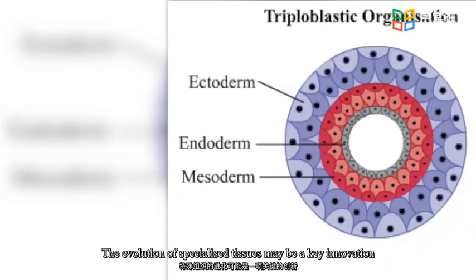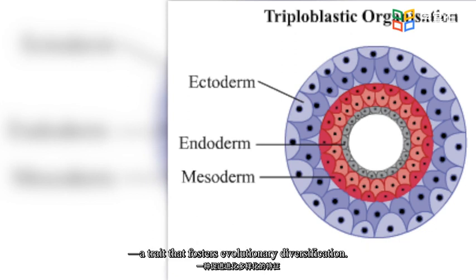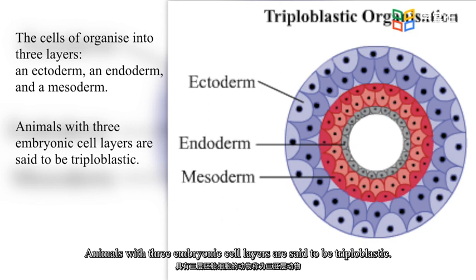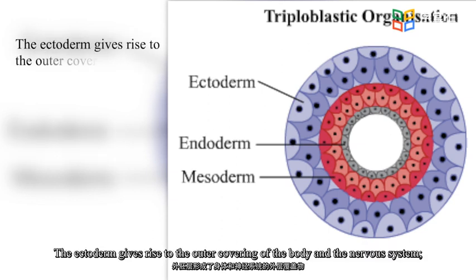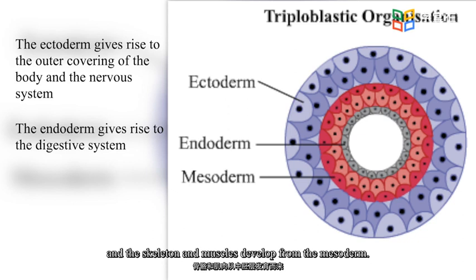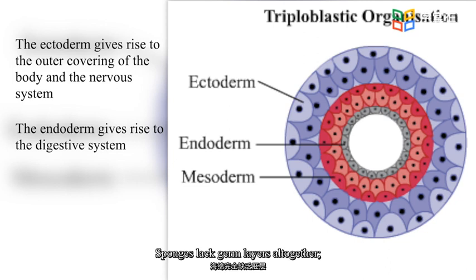The evolution of specialized tissues may be a key innovation, a trait that fosters evolutionary diversification. During embryogenesis, the cells of most animals organize into three layers: an ectoderm, an endoderm, and a mesoderm. Animals with three embryonic cell layers are said to be triploblastic. The ectoderm gives rise to the outer covering of the body and the nervous system. The endoderm gives rise to the digestive system, including the intestine. The skeleton and muscles develop from the mesoderm. Cnidarians are diploblastic and lack organs. Sponges lack germ layers altogether and therefore have no tissues or organs. All triploblastic animals are members of the Bilateria.